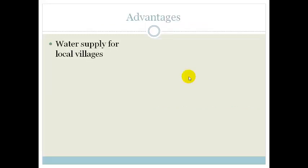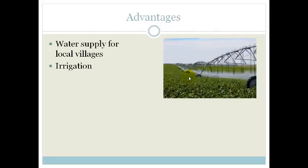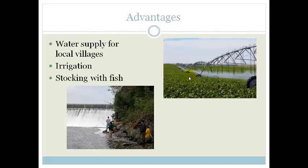Advantages of dams: water is supplied for the villages, so there's lots of water supply for local villages. There is irrigation for the farms and it stocks with fish, so a lot of people can fish either for their livelihood or for fun.